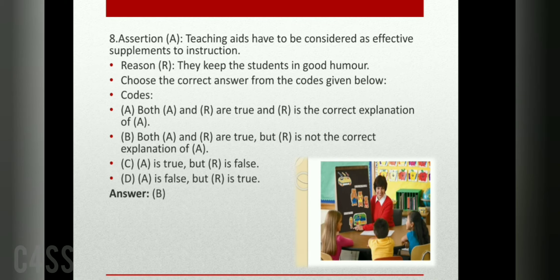Given an assertion and a reason, choose the correct answer. Assertion: teaching aids have to be considered as effective supplements to instruction. Reason: they keep the students in good humor. Answer: both assertion and reason are true, but the reason is not the correct explanation of the assertion.